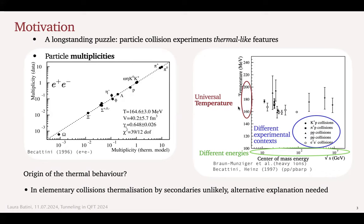What we want to shed light on is the origin of this thermal behavior. These apparent thermal features could be explained in the case of heavy ion collisions because of multiple rescatterings and re-interactions between produced particles. But this explanation is much less plausible for elementary collisions, where the number of particles produced and the number of secondaries is much lower. Therefore, we need to find an alternative explanation and develop a model that captures the essential features required to recover this behavior.